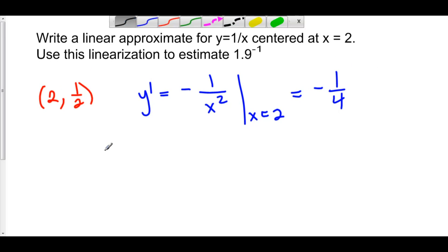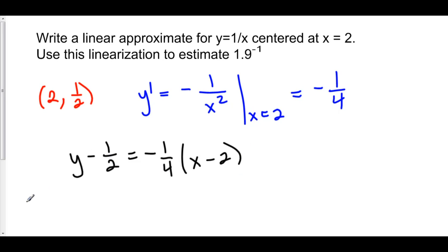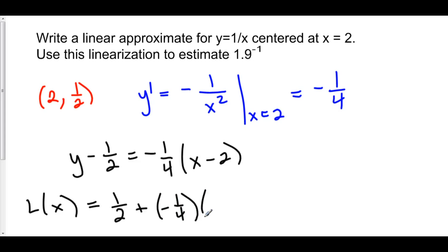Let's use point-slope form to write the equation of this line, which is y minus 1 half is equal to m, which is negative 1 fourth times x minus 2. Moving everything over, we have our linearization: L of x is equal to 1 half plus negative 1 fourth times x minus 2.